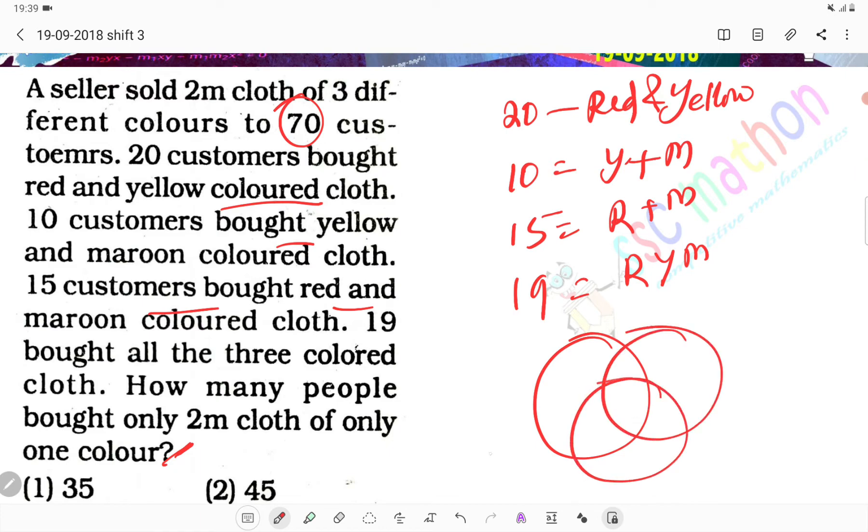Which is which? Let's take this as red, and this as yellow, and this as maroon. We've taken all three colors. 19 people bought all three.